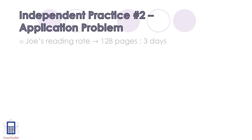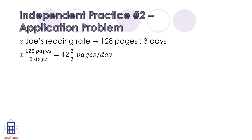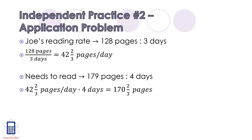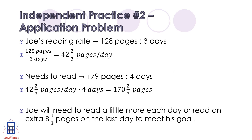We know that Joe's current reading rate is 128 pages in three days. If we divide these two numbers, we find that he has a unit rate of 42.2 pages each day. He needs to read 179 remaining pages in four days. So we multiply 42.2 pages per day times four days, which is 170.2 pages. Unfortunately, Joe will need to read a little more each day, or he'll need to read an extra 8.3 pages on the last day to meet his goal.